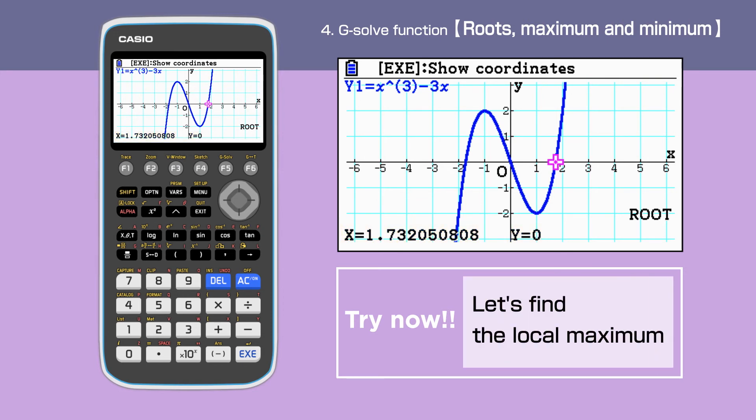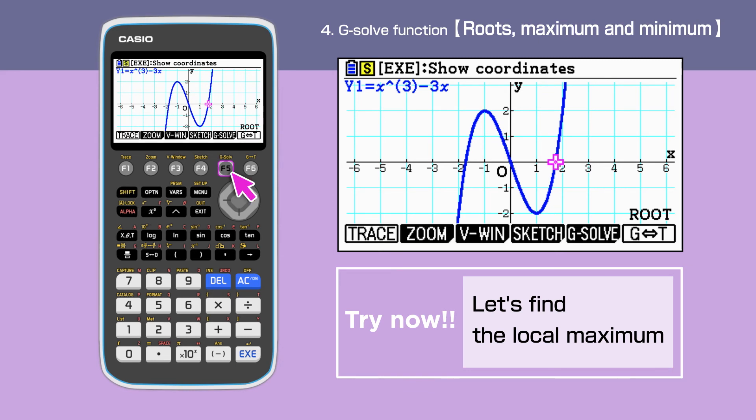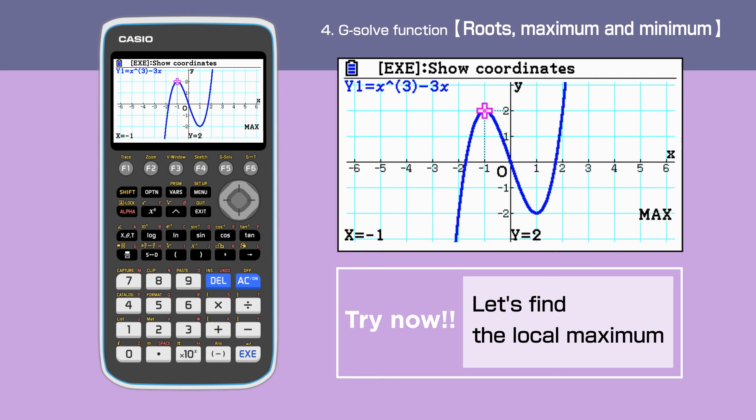Next, we can find the local maximum of the graph. Press SHIFT to go to G-solve, then enter F2 to select maximum. The cursor at the local maximum, and the coordinate of this point is minus 1, 2 are found.